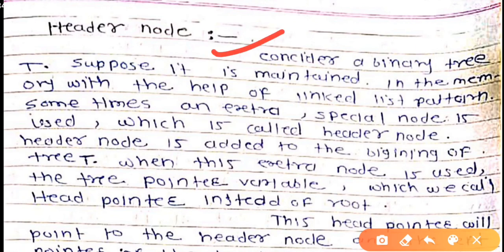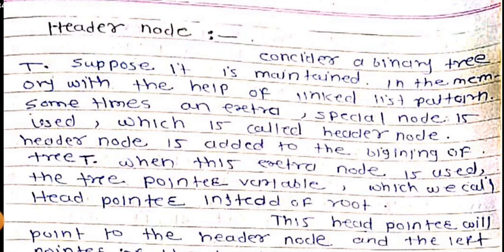Consider a binary tree T, suppose it is maintained in memory with the help of a linked list pattern. Sometimes an extra special node is used - this special node is known as the header node. The header node is added to the beginning of the tree. When this extra node is used, the tree pointer variable is called the head pointer instead of root. The traversal starts from the header node.